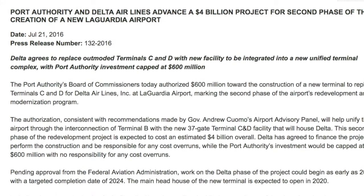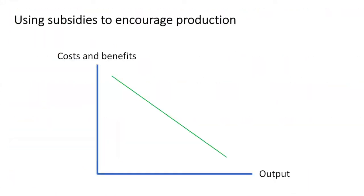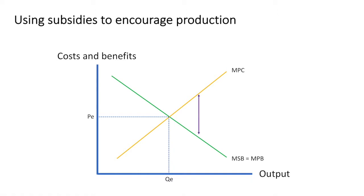How does that look on a diagram? We start with the marginal private benefit and marginal private cost curves. The marginal social benefit and marginal private benefit curves are the same. In free market equilibrium, the price is PE and quantity produced is QE. We'd like to increase the quantity produced because of the external benefits from production. The marginal social cost is lower than the marginal private cost because it includes external benefits. The socially optimal level of production is Q0 at a price of P0. There is a potential welfare gain of triangle ABC.